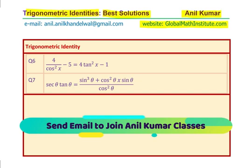In case you want to learn from me, you can always send an email on the address given. The two trigonometric identities are question number 6 and 7 since we have already dealt with the first 5 in another video.